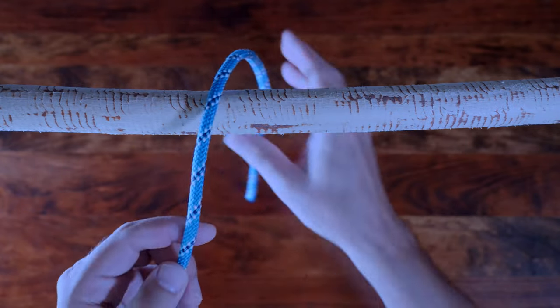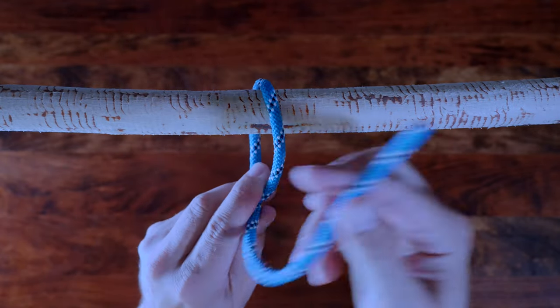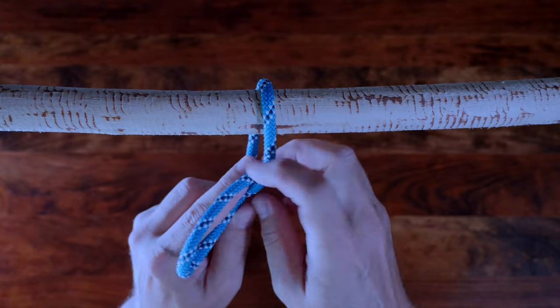So to tie a half hitch, all you need to do is pass the working end of a rope around an object and then tie an overhand knot.